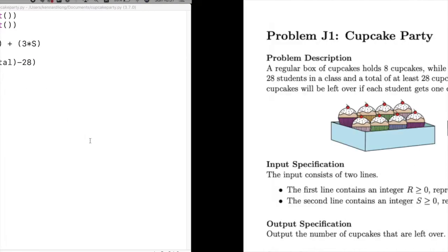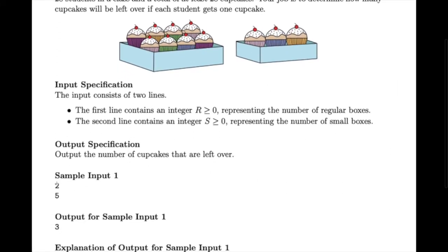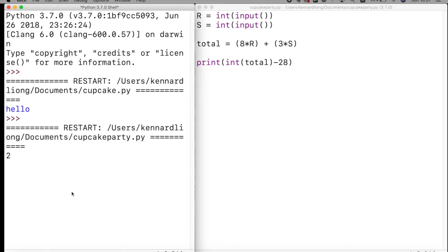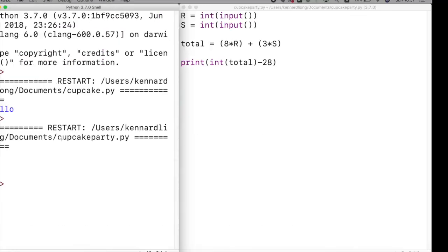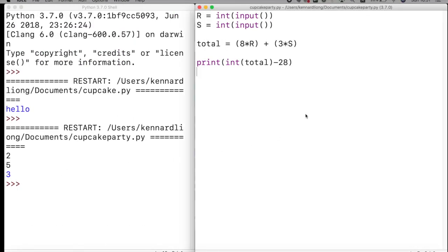So let's try one of their inputs, two and five. I expect the output to be three here and that's what it is. Let's try the other input, two and four, and we expect the output to be zero here.